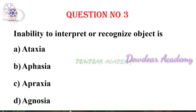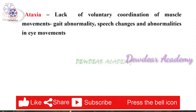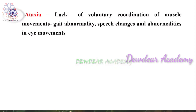Question number three: Inability to interpret or recognize objects — options: ataxia, aphasia, apraxia, agnosia. The right answer is agnosia. Ataxia is the lack of voluntary coordination of muscle movements, speech changes, and abnormalities in eye movement — it is concerned with gait abnormalities.